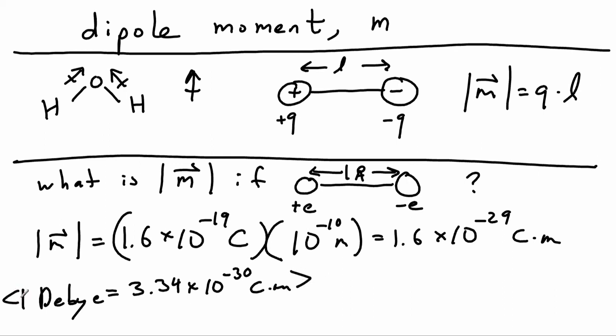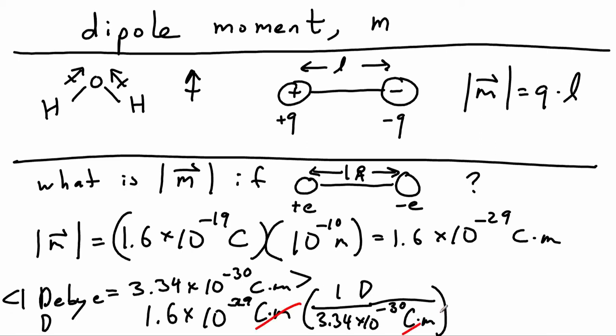So let's take our answer and convert it to debyes. So the symbol for debye is just a d. So the conversion factor is 1 debye is equal to 3.34 times 10 to the negative 30 coulomb meters. So we can cancel our coulomb meters and get our answer in debye. And we can see that that is equal to 4.8 debye.